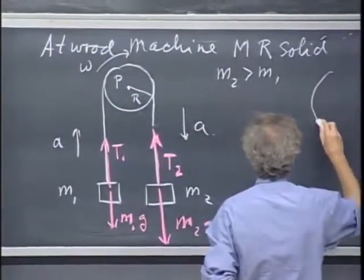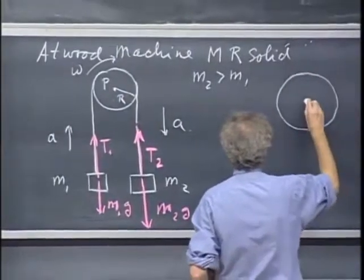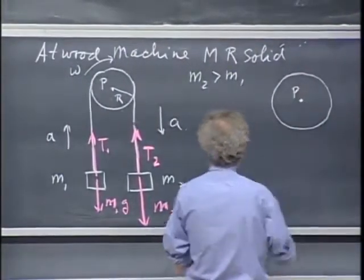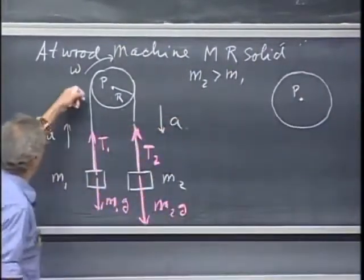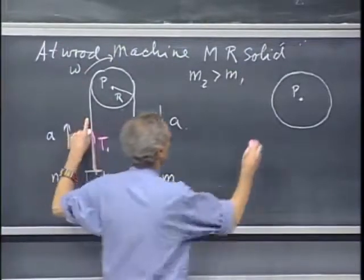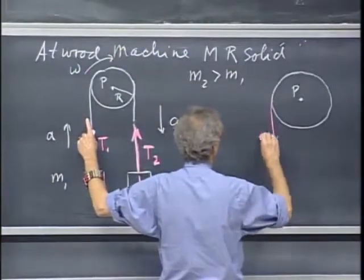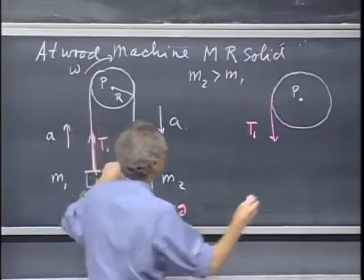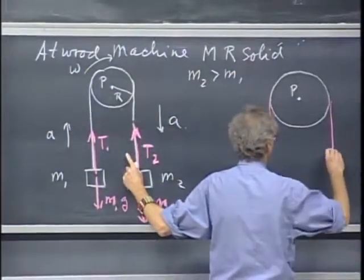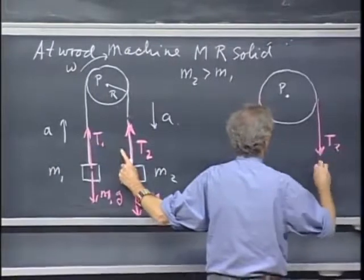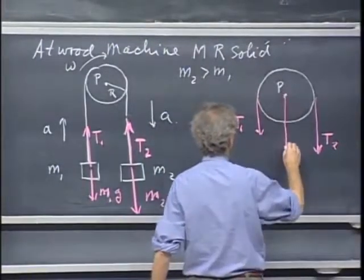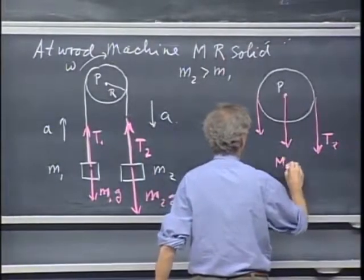For the pulley, it's a little bit more complicated. This is that point P. If here's a tension T1, it's pulling down on the pulley, so this is T1. And this T2 is pulling down on the pulley, so there's T2. It has a mass, so its weight is mg.